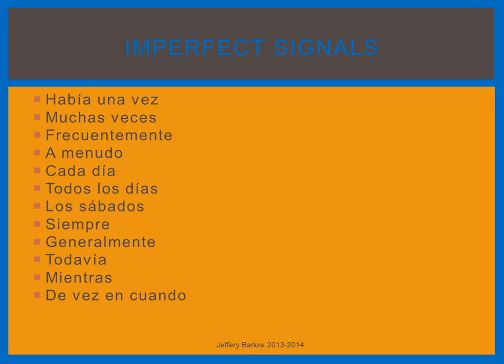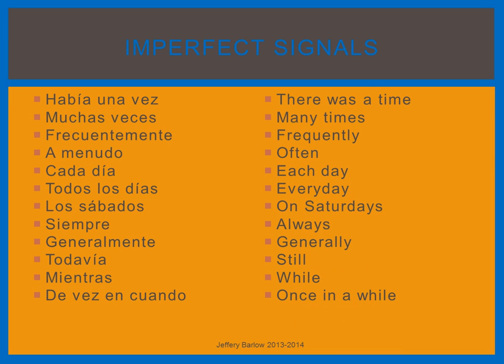You will see these signals more when you study the preterite versus the imperfect, but all of these phrases are going to require the imperfect if you're speaking about the past tense. What they all have in common is that whatever was done in the past tense was done habitually or an undetermined number of times.